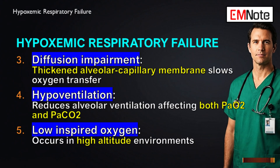Diffusion impairment is different — it's a structural problem. The membrane between the alveoli and the capillaries gets thick or damaged, like in pulmonary fibrosis. It physically slows down how fast oxygen molecules can move into the blood. At rest, there's usually enough time for oxygen to make it across, even through a thickened membrane. But during exercise or stress, blood flows faster and there isn't enough time for that slow transfer to happen — that's when you see significant hypoxemia.